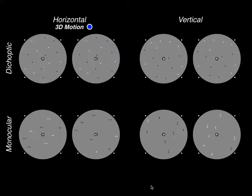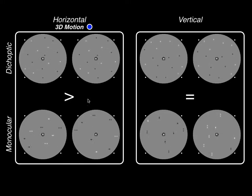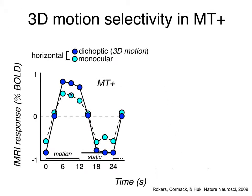If an area is sensitive to 3D motion — specifically above and beyond just retinal motion sensitivity — we would expect it to respond more vigorously to a stimulus that produces 3D motion than to one that does not. On the other hand, since neither the vertical dichoptic nor monocular conditions produce a 3D motion percept, we would not expect a difference between those two in that area. To our surprise, we found this selectivity in area MT-plus, the MT complex.